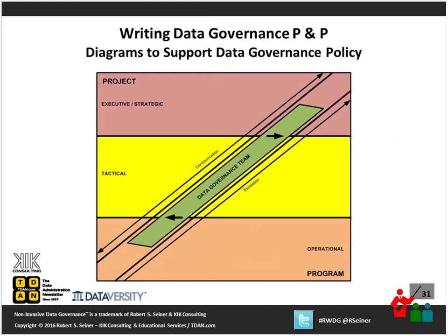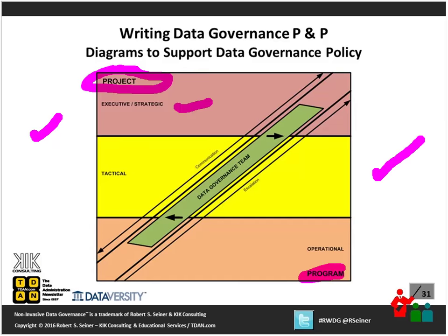This is another take on the diagram — two triangles instead of one pyramid. On the left-hand side, the organization spelled out in their policy the information about their project approach. On the right-hand side, it talked about the program approach to roles and responsibilities. During the project phase, the emphasis is on the executive or strategic level with further emphasis on tactical, but less on operational stewards. But when we get to the point where the program takes place, the emphasis is on the people doing the work — defining, producing, and using data as part of their everyday job. The emphasis shifts to operational roles and then tactical roles, less so on executive or strategic. Another use of a diagram representing your data governance program that you'd incorporate into your data governance policy.